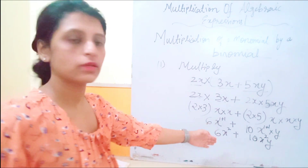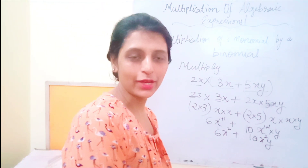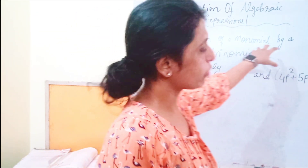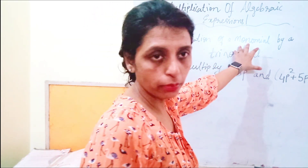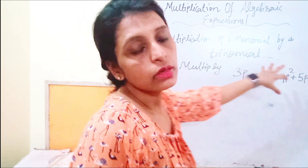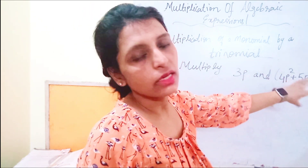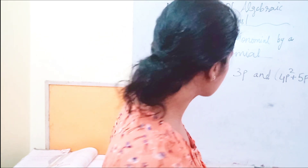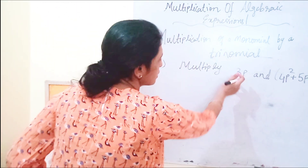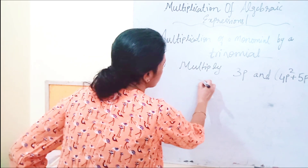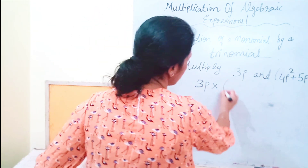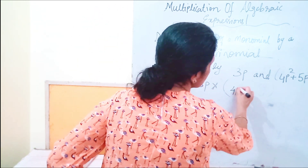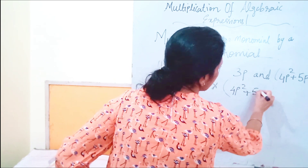This is the multiplication of a monomial by a binomial. Now I am going to tell you the multiplication of a monomial by a trinomial — how we can multiply a single-term expression with a trinomial. A trinomial is an algebraic expression that contains 3 terms. So here, 3p is the monomial and it is multiplied by 4p squared plus 5p plus 7, which is the trinomial.